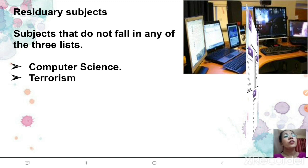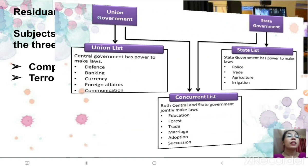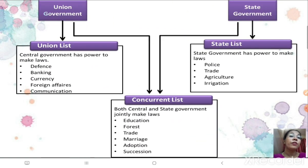Now children, this tabular form is to revise once again the union list, state list, and the concurrent list.